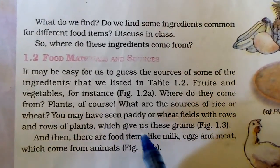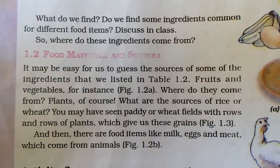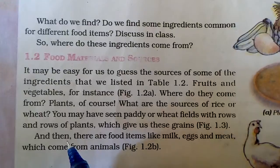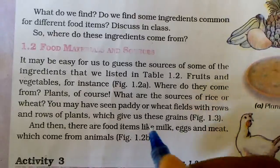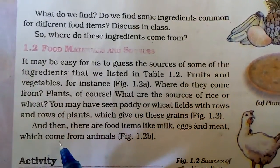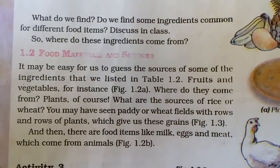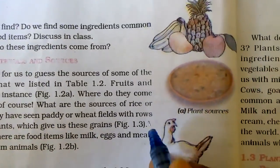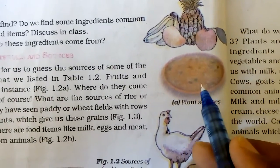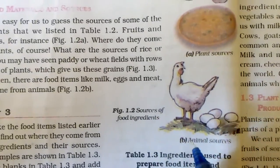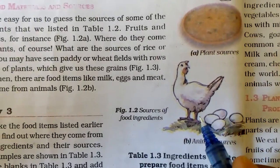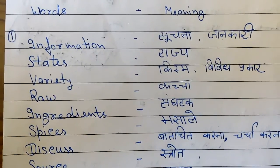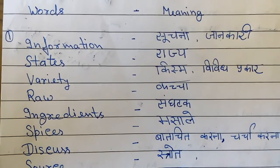Plants give us grains like rice and wheat. There are also food items like milk, eggs, and meat, which come from animals. This chapter is a very important chapter.